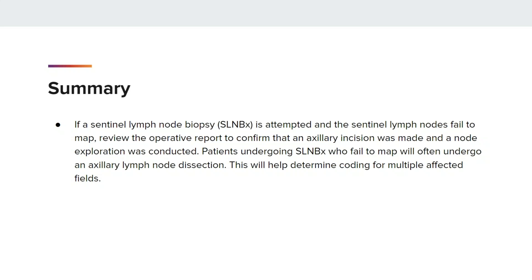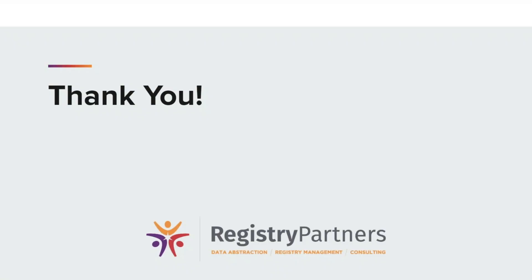In summary, if a Sentinel Lymph Node biopsy is attempted and the Sentinel Lymph Nodes fail to map, review the operative report to confirm that an axillary incision was made and a node exploration was conducted. Patients undergoing Sentinel Lymph Node biopsy who fail to map will often undergo an axillary lymph node dissection. This will help determine coding for multiple affected fields. This concludes the CTR coding break. We hope you found the information useful and thank you for your time.